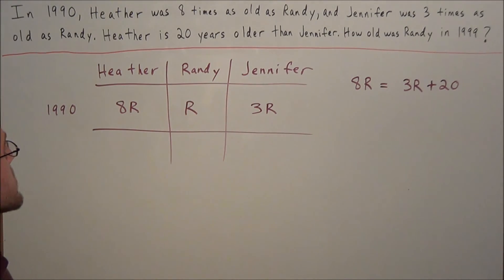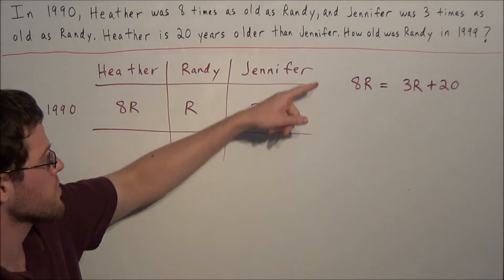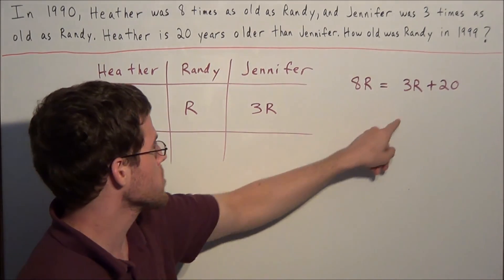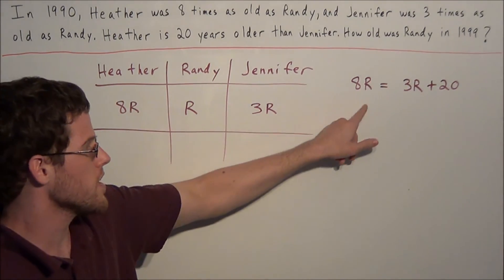So just to recap, since Heather is 20 years older than Jennifer, if we add 20 to Jennifer's age, then that quantity would equal Heather's age 8r.